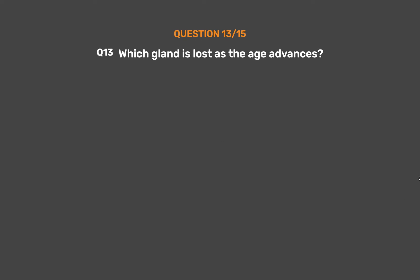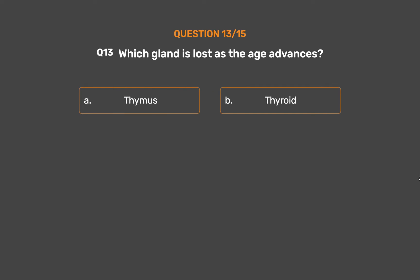Question No. 13. Which gland is lost as age advances? Option A - Thymus. Option B - Thyroid. Option C - Pancreas. Option D.